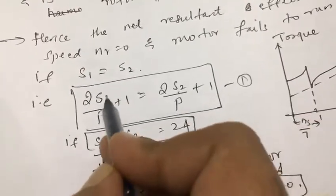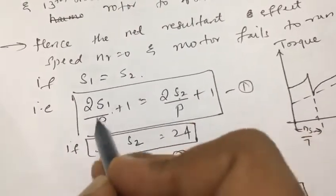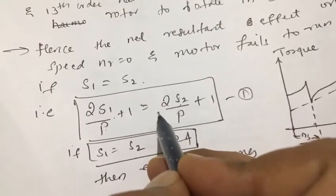If we solve this by taking p as 4 and s1 and s2 as 24, then for the 11th and 13th order harmonics, one will be opposite, another will be in the same direction. So the net effect will be zero.